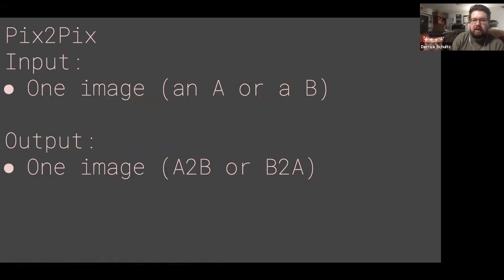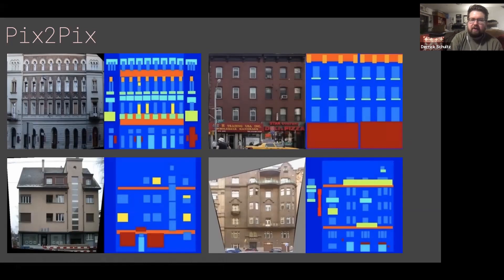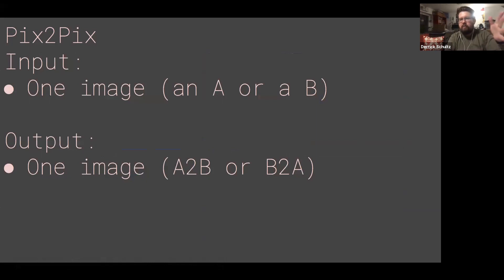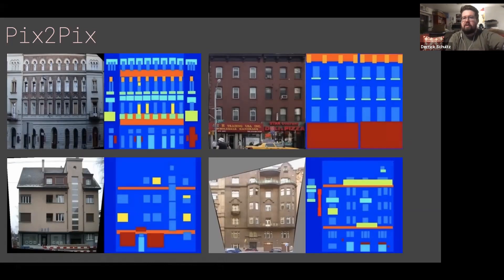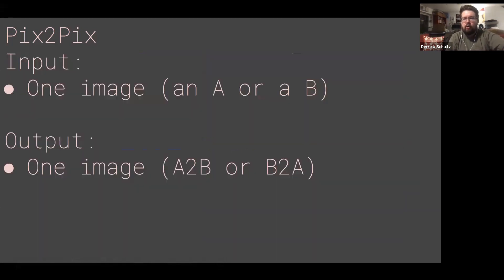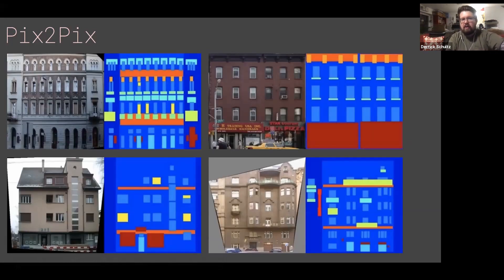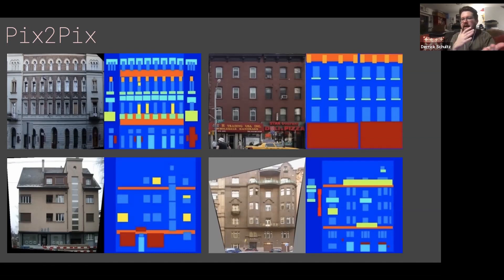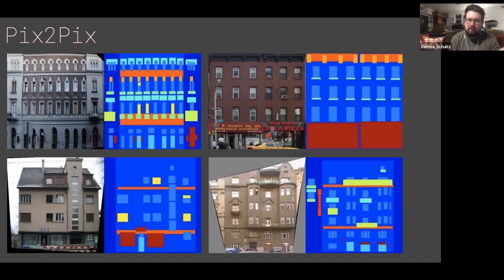When you're actually testing a model, you give it one image. In this case, we might give it a new version of the semantic labeling map and get out a realistic photo of a building. Or we could do the reverse — give it a new photo of a building it's never seen and it would spit out a different semantic map. What's nice about these models is you can get A or B depending on what you feed it. You could create new semantic labeling maps or create new buildings that have never been seen before.